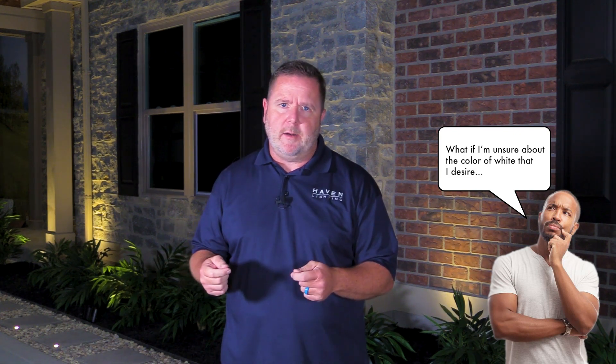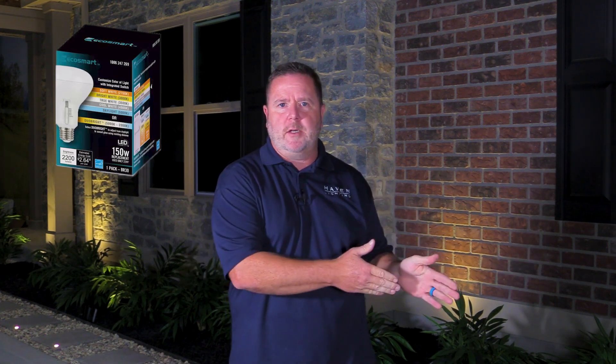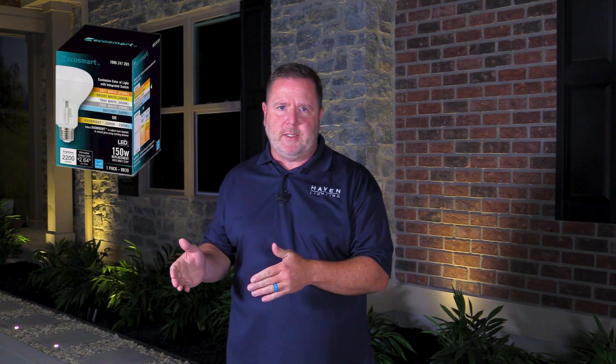You might be saying, what if I'm unsure about the color of white that I desire? That's okay — most people are right there with you. Lucky for you, many of the light sources available now have a multi-selector switch on the source that you can select anywhere from 2700 Kelvin all the way up to 5000 Kelvin to give you the optimum solution for your environment.